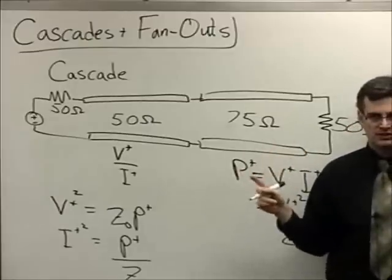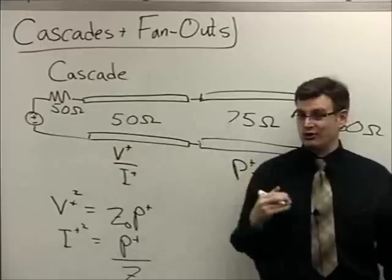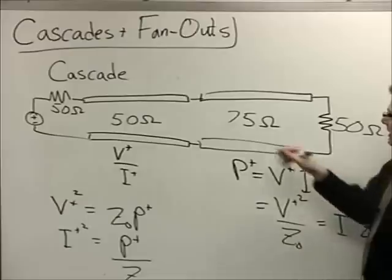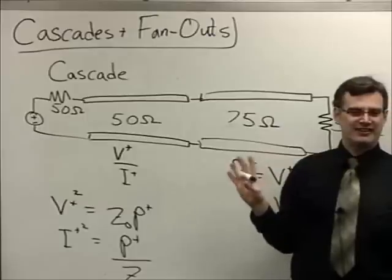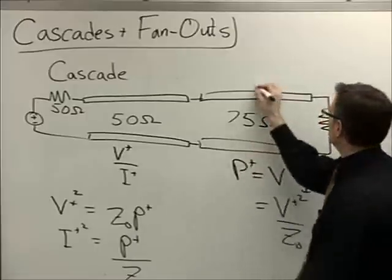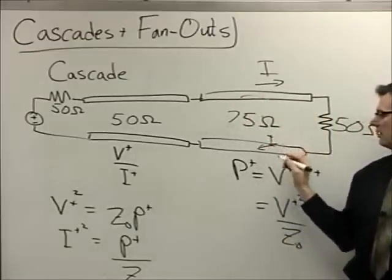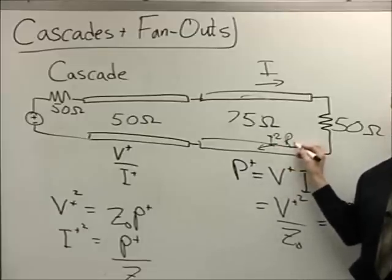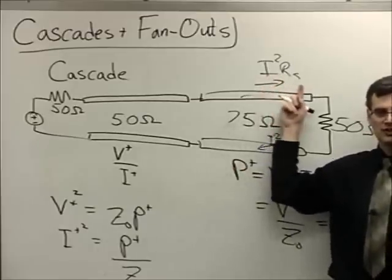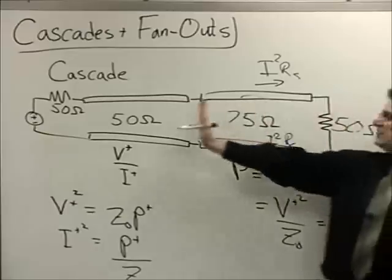For long-distance cables — the several hundred meters from your cable company's last amplifier to your home — you want to use 75 ohms. Nothing is ever quite lossless; there are conductor losses that accumulate over long cable runs. Ohmic losses are I squared times the series resistance, so a smaller current results in much less ohmic loss on the line, and you'll get more power out at the end.